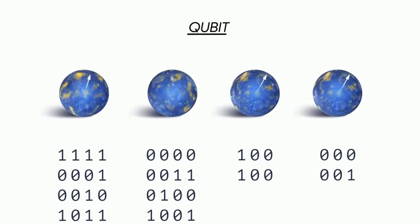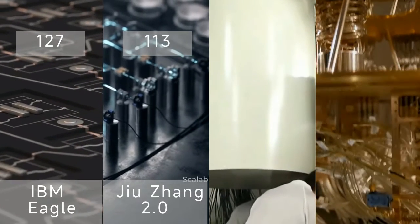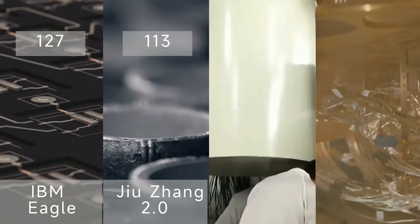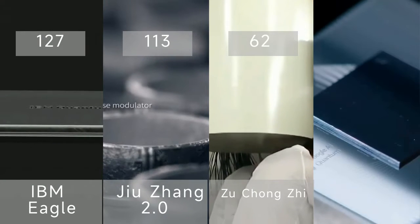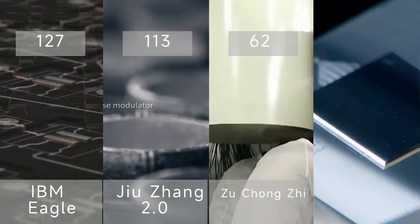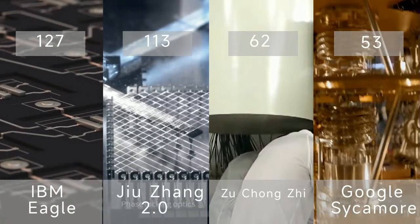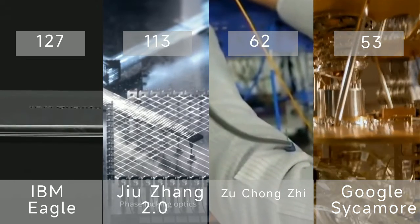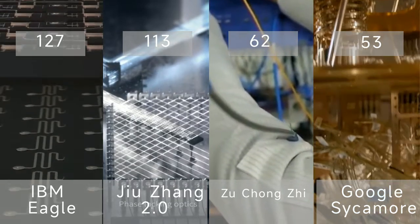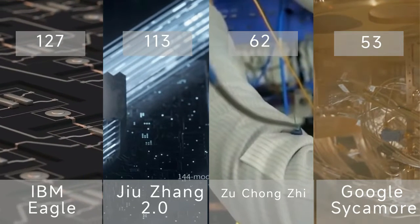Currently the situation is IBM Eagle is leading with 127 qubits, followed by China's photon quantum computer Jiu Zhang with 113 qubits. Then it is the Chinese superconducting quantum computer Zhu Changji with 62, and then is the Google Sycamore with 53. However, although it has more qubits, the task Eagle and Zhu Changji did is relatively simple, and the requirements for manipulation accuracy are still lower than those of Sycamore. Therefore, they have not demonstrated quantum advantage in practical tasks.